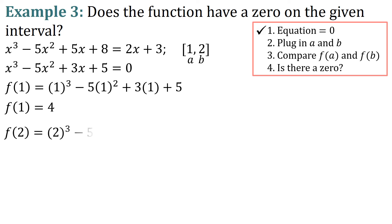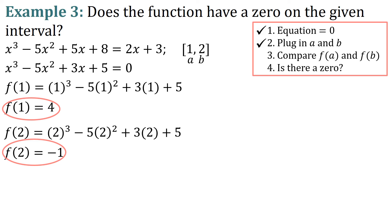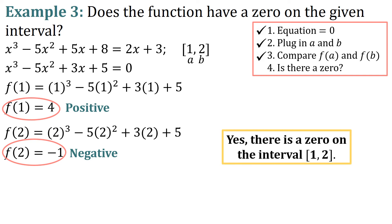Now plug in b equals 2: f of 2 equals 2 cubed minus 5 times 2 squared plus 3 times 2 plus 5, which simplifies to negative 1. Comparing f of a and f of b: f of 1 is 4 (positive) and f of 2 is negative 1 (negative). Since one is positive and one is negative, we know there is a zero on the interval (1, 2) — because the function had to cross the x-axis to go from 4 to negative 1.